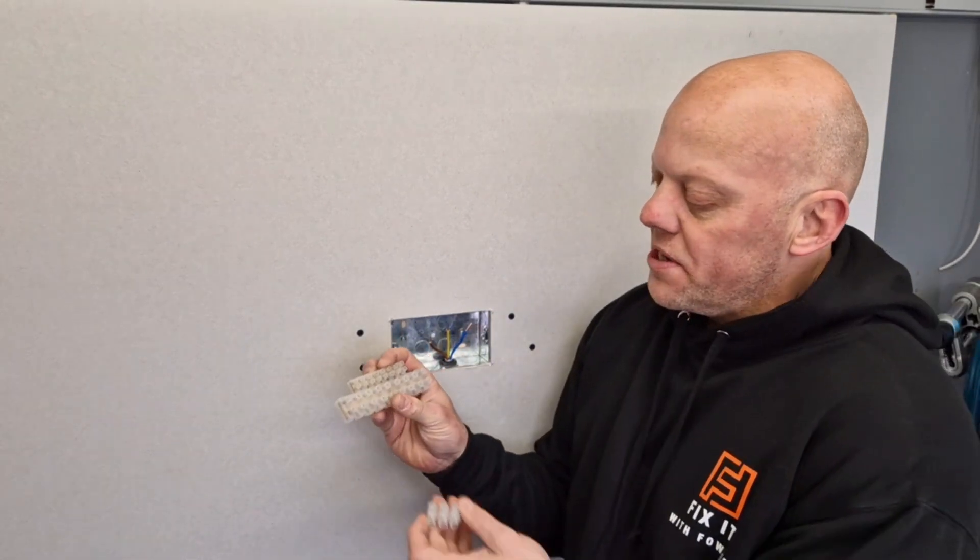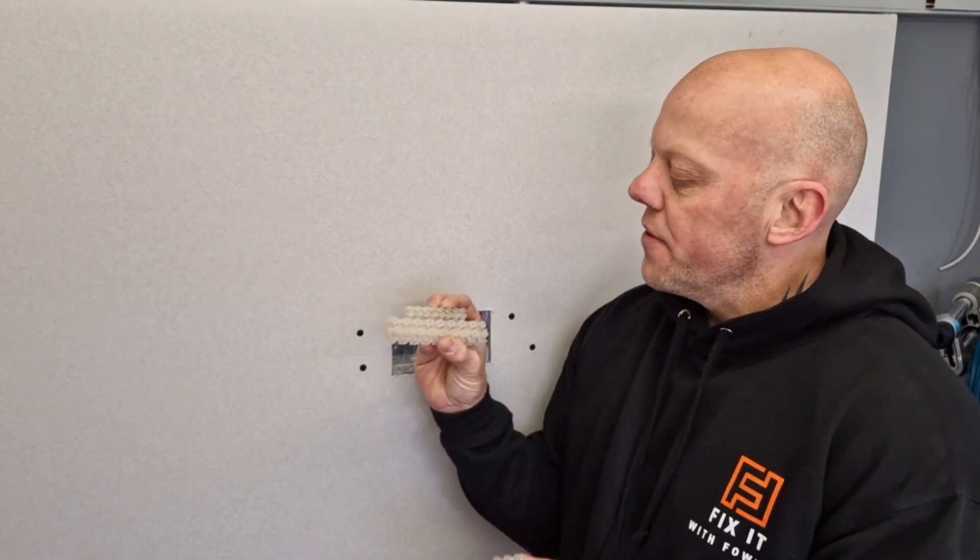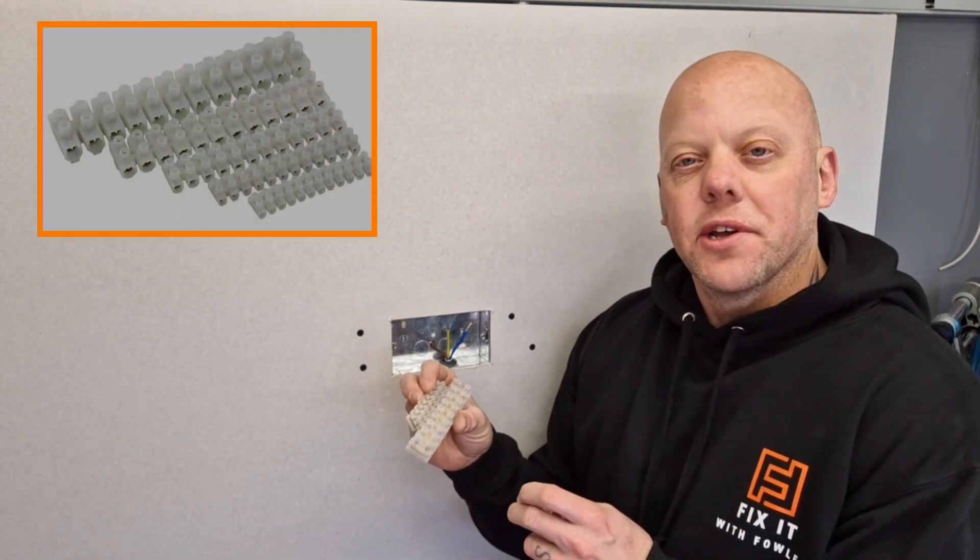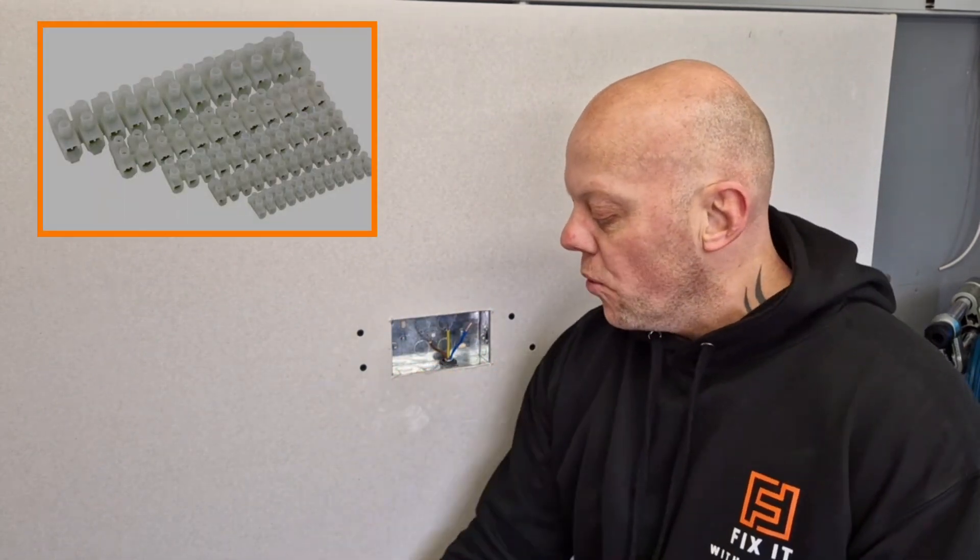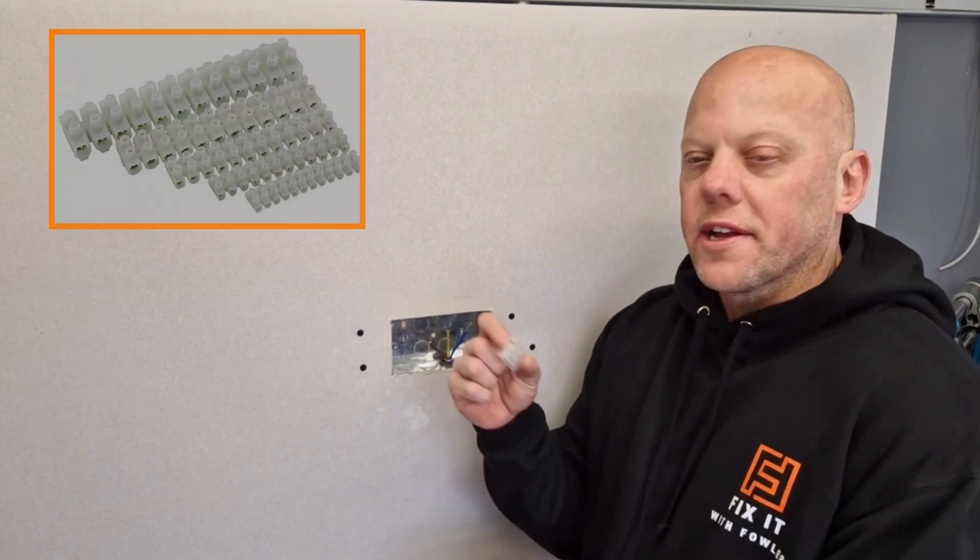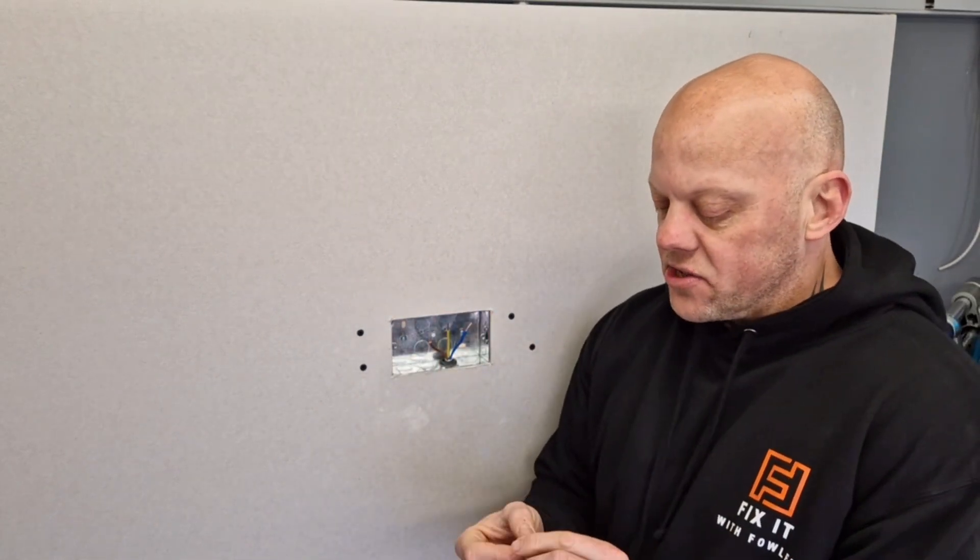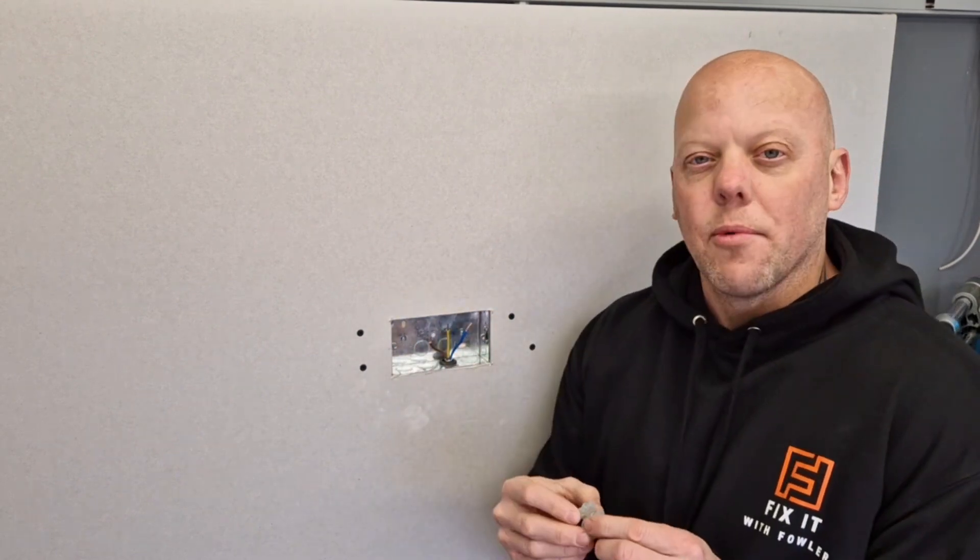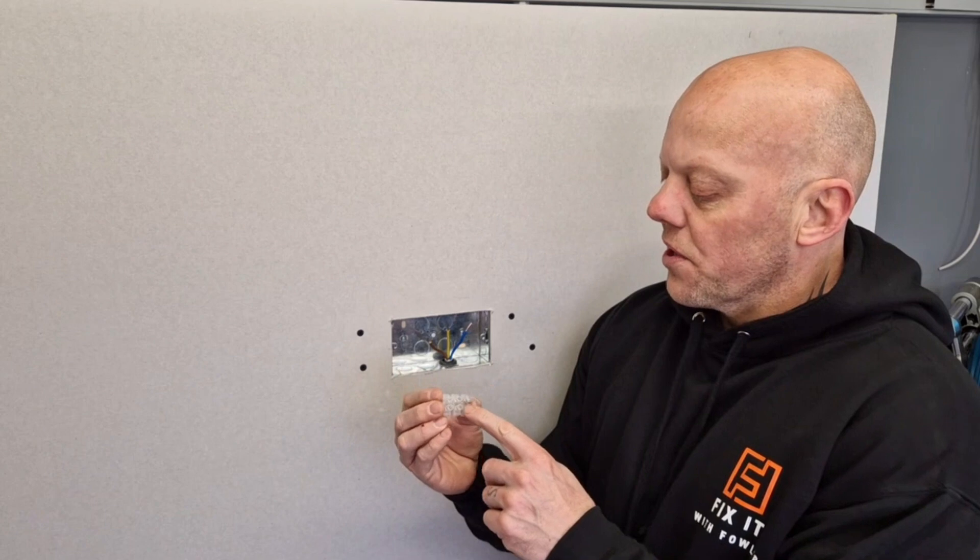So the first method to extend these cables will be traditional connector blocks. Now these connector blocks come in different sizes and they're rated to suit the cable, so it's important that you pick the right connectors to suit these cables. In this instance, I've got 16 amp connector blocks to suit this cable.